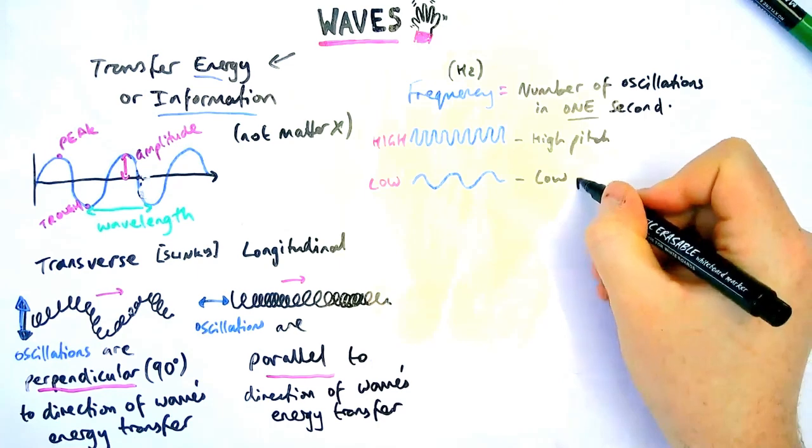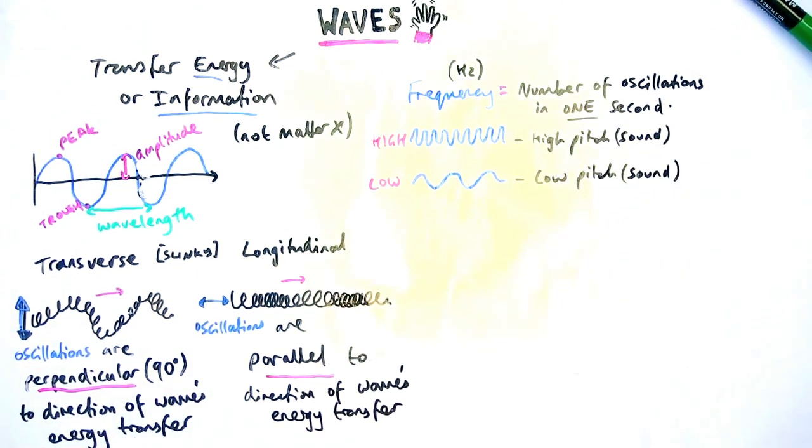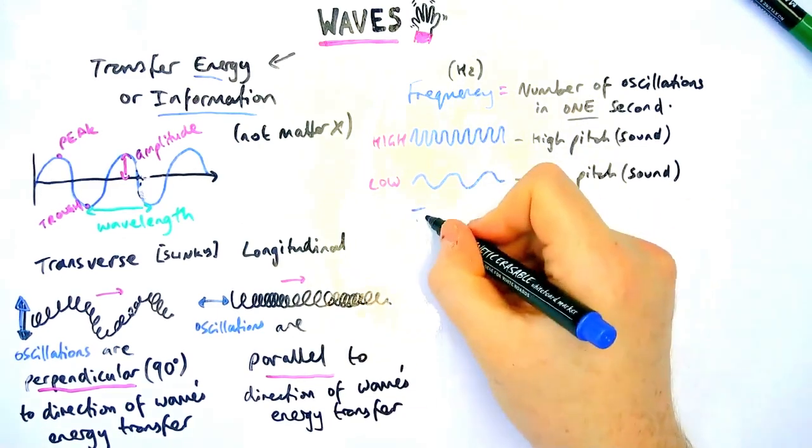So for a sound wave, for example, a high frequency means a high pitch and a low frequency means a low pitch. That's how it affects the sound you hear.